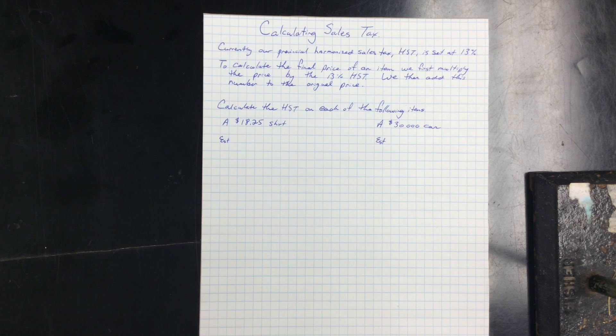To calculate the final price of an item including the tax, we must multiply the price by the tax 13% then add this number to the original price. This process is very similar to when you're calculating discount, but instead of subtracting the answer we're going to add the answer to the original price.